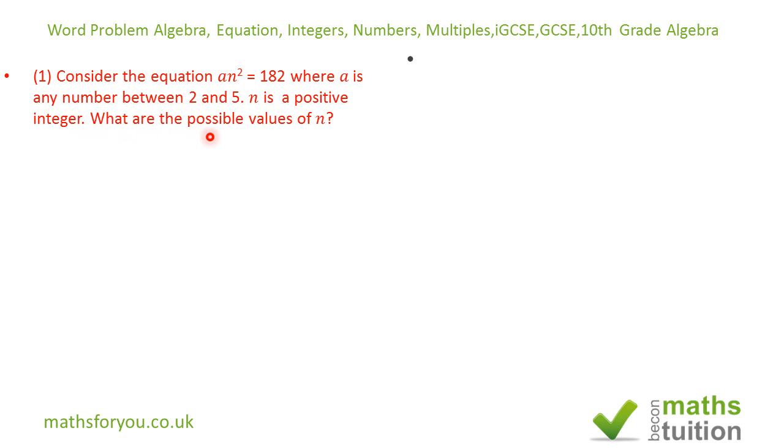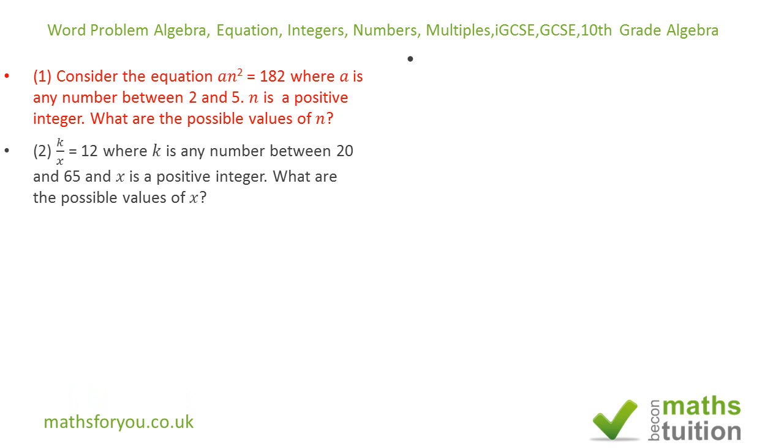Question 2 says k/x = 12 where k is any number between 20 and 65 and x is a positive integer. What are the possible values of x?